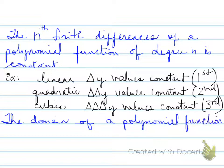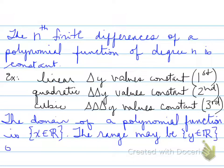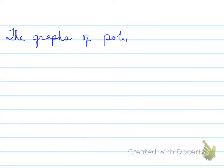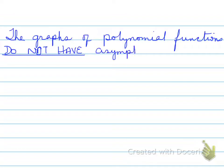The domain of a polynomial function is always x belongs to the real numbers — that is true for every polynomial function. The range may be y belongs to real if it's an odd degree function, or have an upper or lower bound if it's an even degree function. The graphs of polynomial functions do not have any asymptotes.